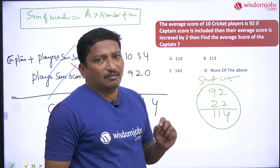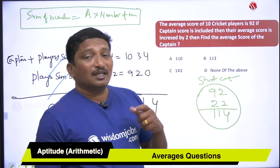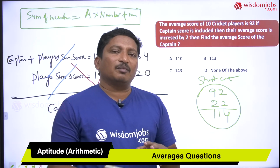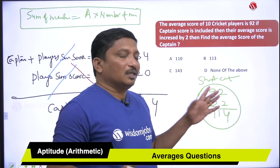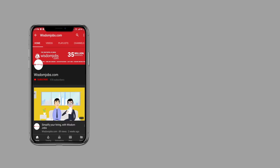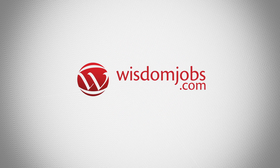Add 22 to 92: 92 plus 22 equals 114. So the captain's score is 114. That is the shortcut method, and it is the better approach for exam point of view — it takes less time than the long method. Initially 10 players, captain added makes 11, increased average by 2: 11 into 2 is 22, add to 92 gives 114.